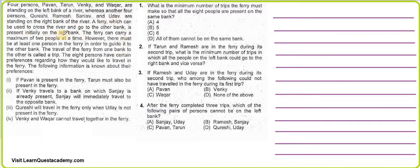There is a ferry which can travel across the river and is currently present on the left side of the bank. The ferry can carry a maximum of two people at a time, and there must be at least one person in the ferry to guide it — the ferry cannot travel on its own. Also, travel of the ferry from one bank to the other is called one trip, and each person has certain preferences according to which they will travel.